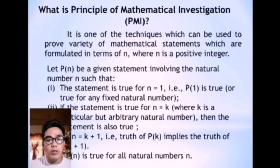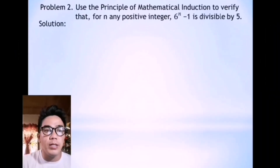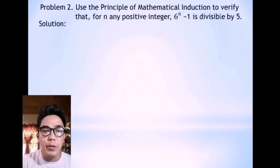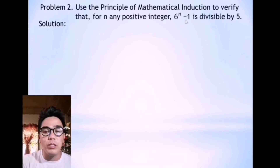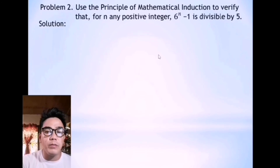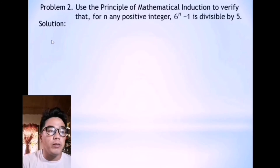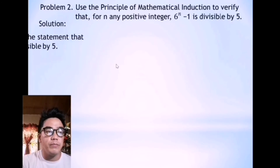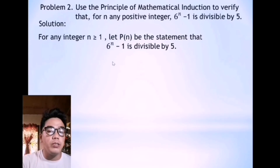Let us apply the PMI with this given problem: use the Principle of Mathematical Induction to verify that for n, any positive integer, 6 to the power of n minus 1 is divisible by 5. So whatever the result, it must be divisible by 5. In proving using PMI, we're going to let the statement be P of n. The first step is to prove that P of 1 is true.